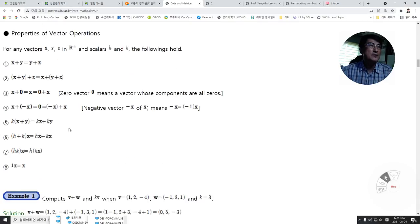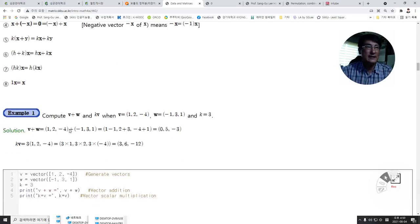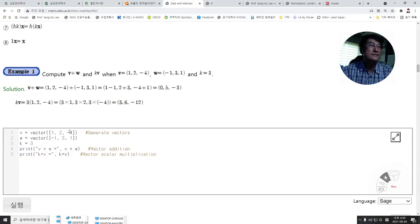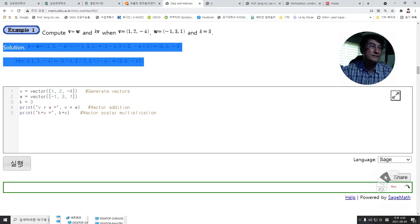These properties also hold for matrix operations that we will see next. Computation: Compute the addition of two vectors or scalar multiplication when we have V and W and scalar k equals 3. Easy computation shows the result like this. We can do those computations with code.